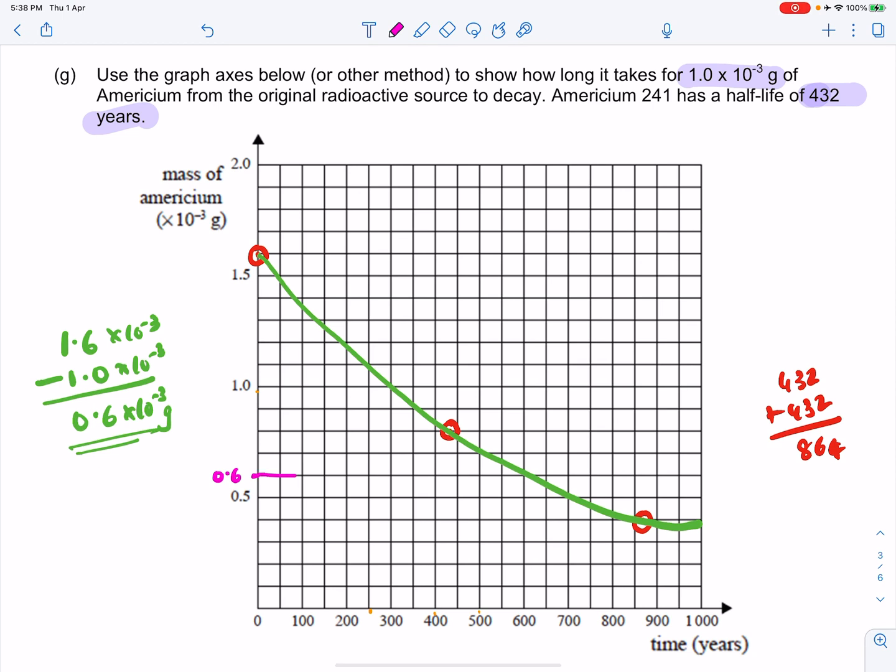You go across from 0.6, then drop down to the time axis just beyond the 600-year mark.